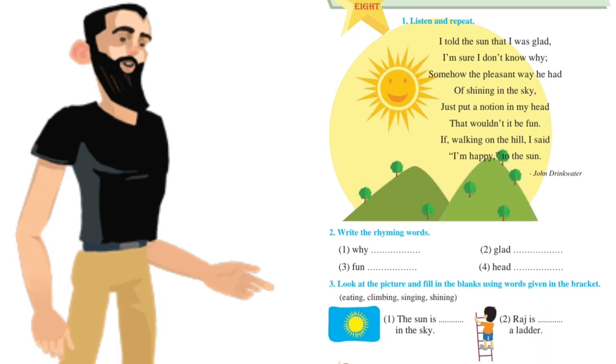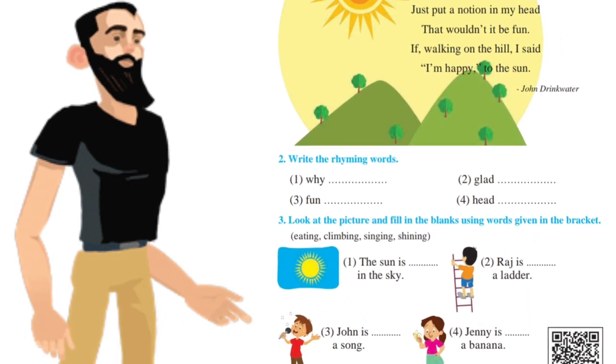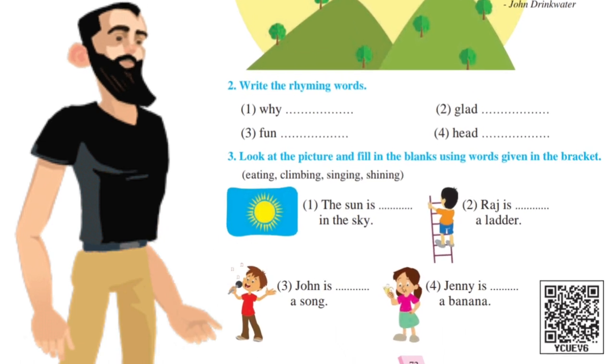Now we will understand the meaning of the lesson. Ab hum is poem ka matlab samjhenge.